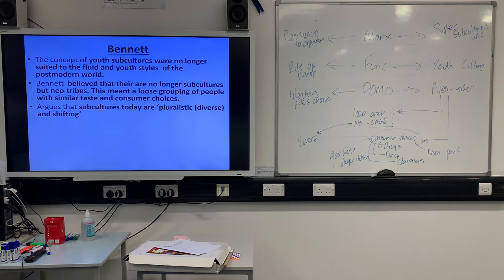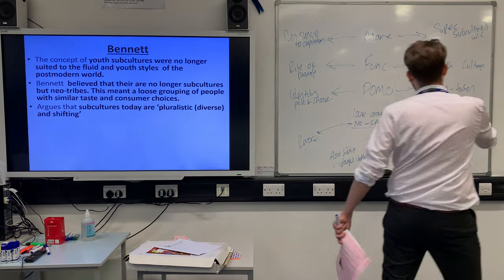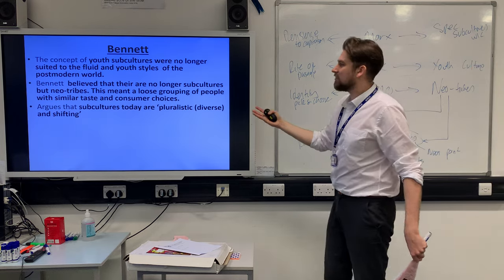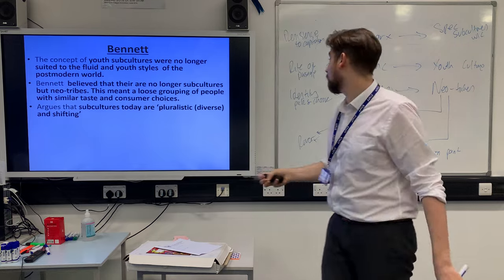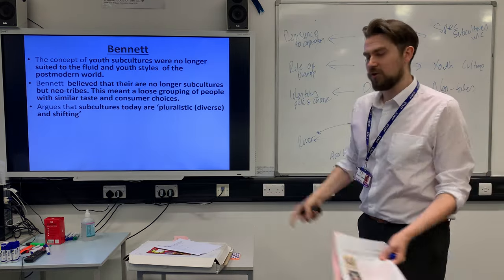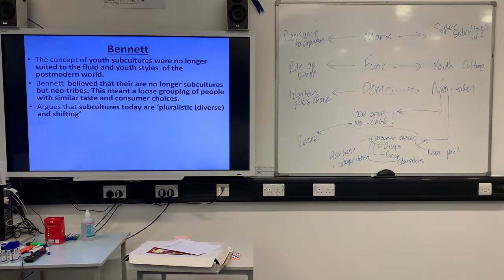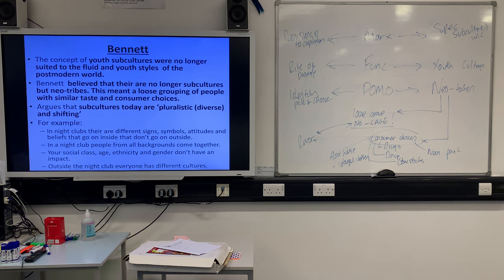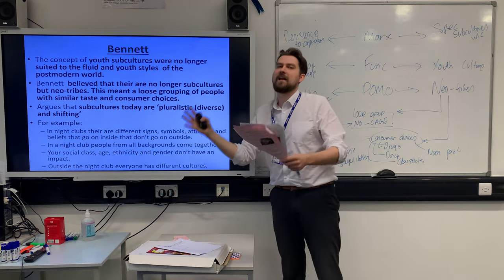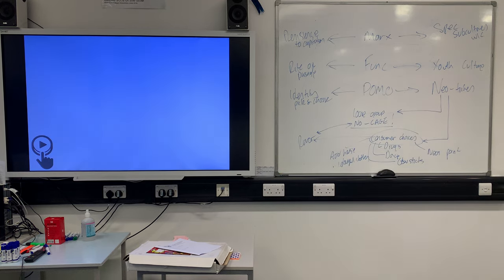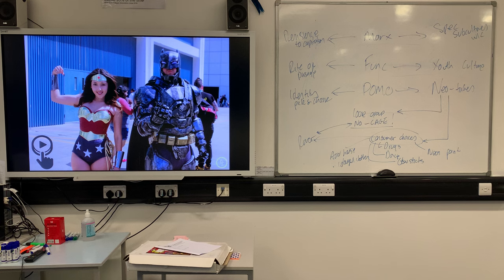Bennett argues that subcultures are pluralistic, diverse, and shifting — that's why he describes them as neo-tribes. Traditional subcultures share the same norms and values all the time, but these are shifting. You could be a raver, a literature fan, a cosplay person, a paintballer — each could be a neo-tribe. For example, in nightclubs there are different symbols, attitudes, and beliefs that don't happen outside. In the nightclub you all come together from different backgrounds, doing the same thing; outside, everybody returns to their own individual life rather than a shared group identity.